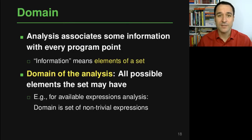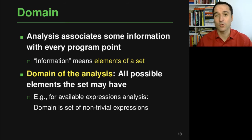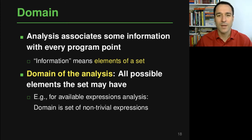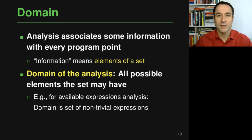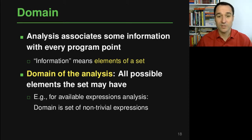Let's look into these six properties in more detail, starting with the domain. What the data flow analysis does is compute some kind of information at every point in your program — more specifically at the entry and exit of every statement. This information is a set of things at each program point, and all these sets are some subset of a larger set called the domain of the analysis.